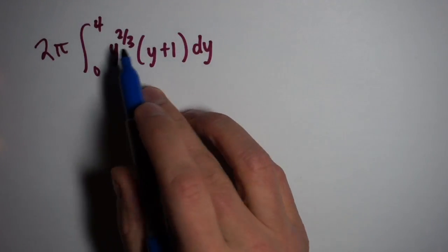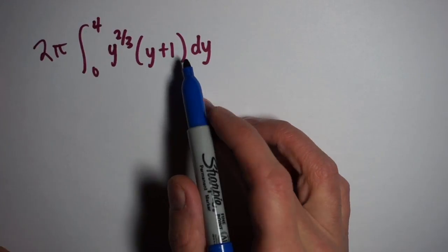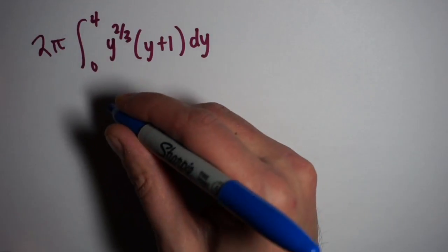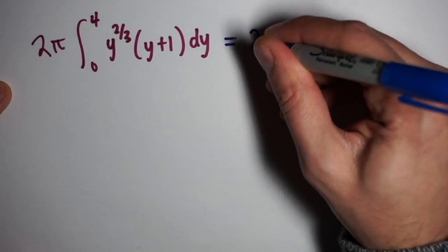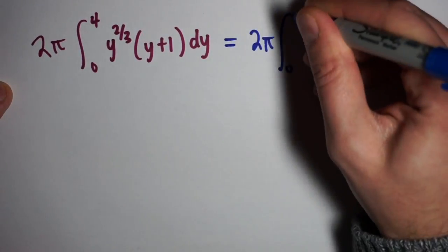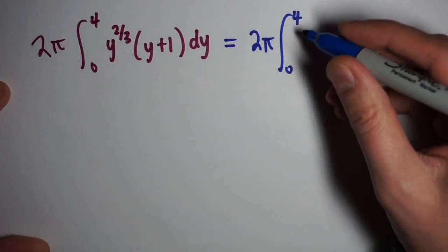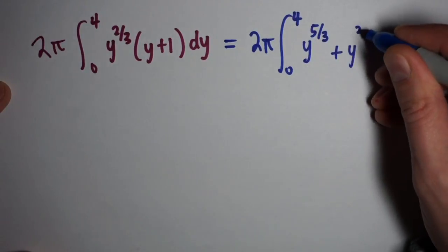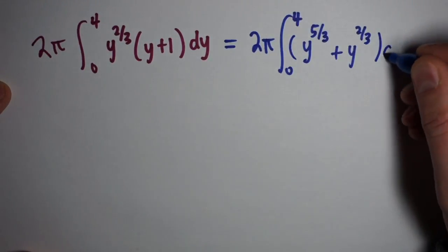To solve this integral, I'm going to distribute the y^(2/3) into the two parts. When I do that, I end up with an easier integral to evaluate. This gives me 2π times the integral from 0 to 4 of y^(5/3) + y^(2/3), all with respect to y.